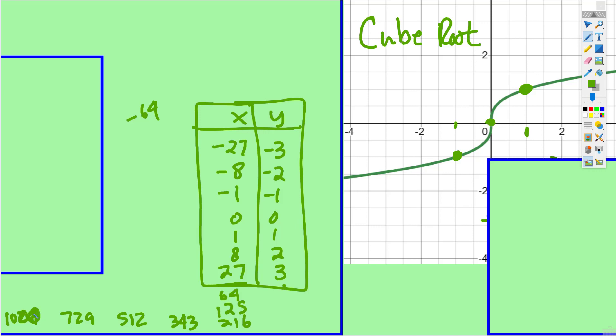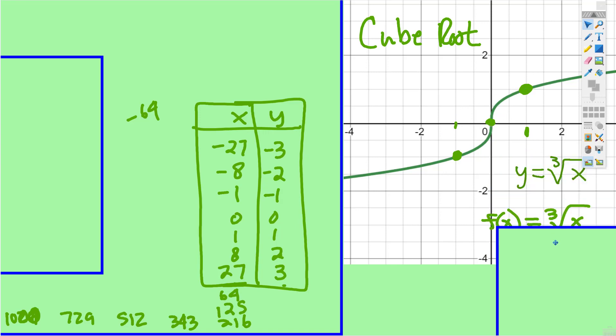So notice as you look left and right, the graph continues. This is the notation: y is equal to cube root of x, f of x is equal to the cube root of x. The x's go infinitely left and right, and even though it's very gradually, the graph is going up left and right.